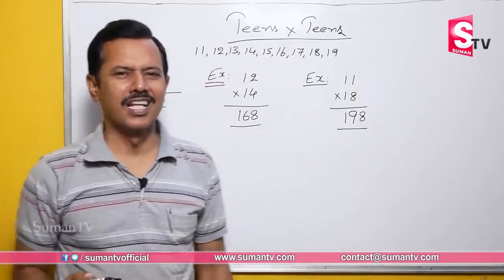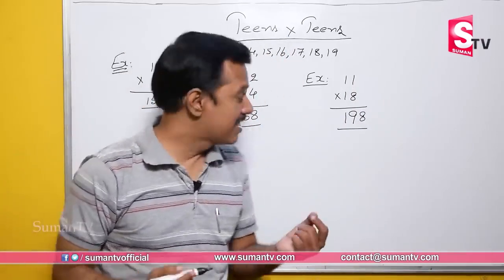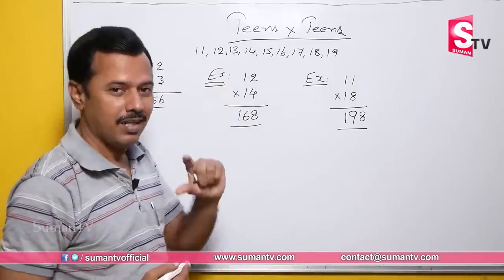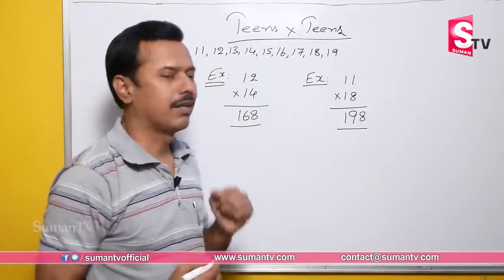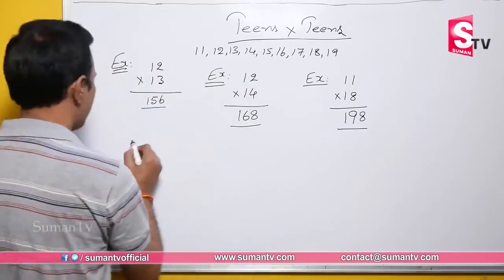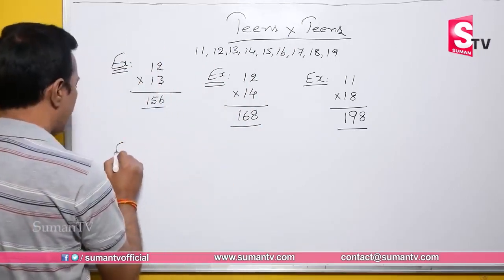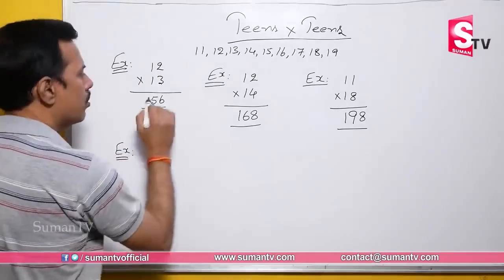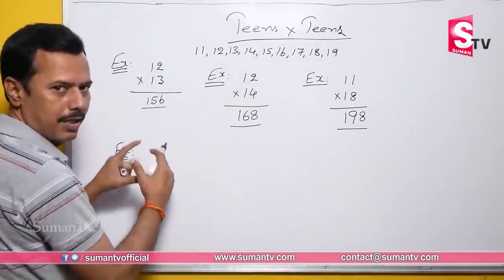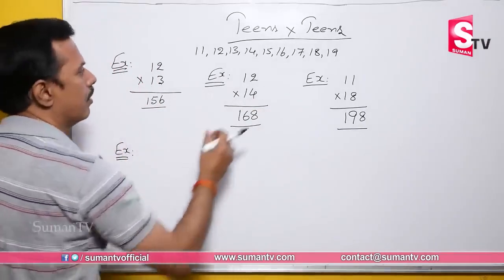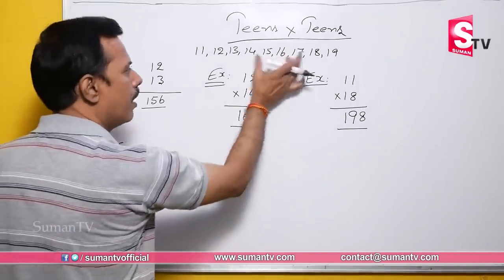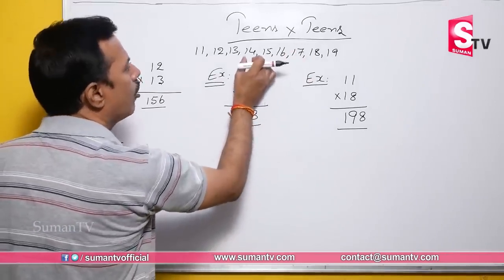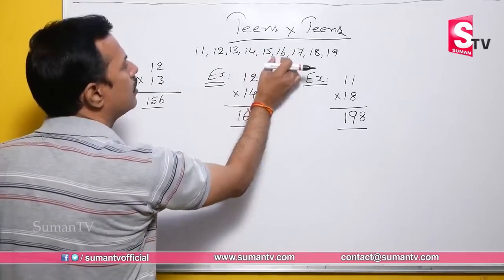Now we covered 11 and 12 examples. Let's move to mid-range teen numbers. Watch carefully — for basic clarity, let's now take 14 into 16.